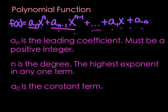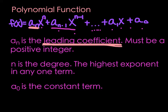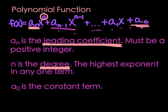A few more vocabulary words. A sub n — that first coefficient — is the leading coefficient. Whenever you put your polynomial in standard form with the highest power first, the coefficient that goes with it is the leading coefficient. It must be a positive integer. The n is the degree — the highest exponent of any one term in a polynomial. And a sub 0, the last term, is the constant term. It doesn't have an x with it and won't change no matter what x is.